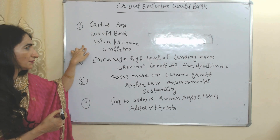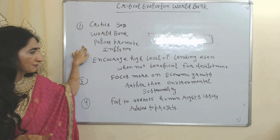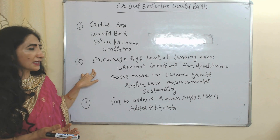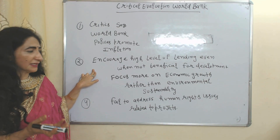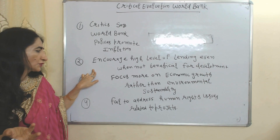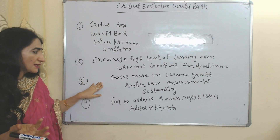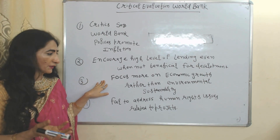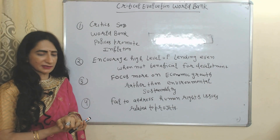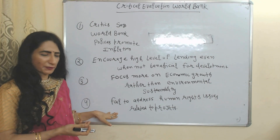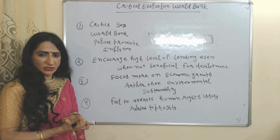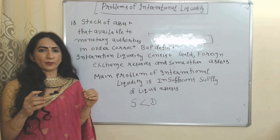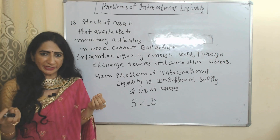Now critical evaluation of the World Bank. Critics say World Bank policies promote inflation. Some people also say World Bank encourages high levels of lending even when not beneficial for development. Some also say World Bank focuses on economic growth more rather than environmental sustainability, and World Bank has failed to address human rights issues related to its projects.